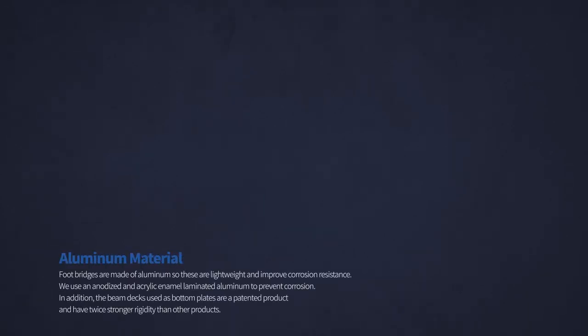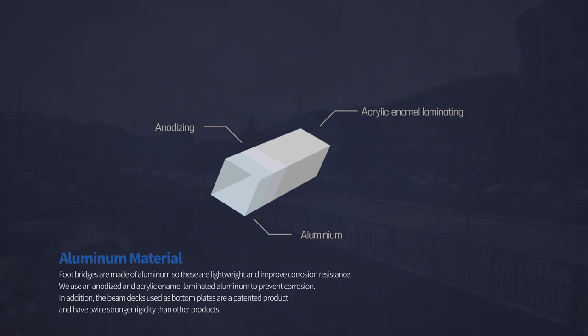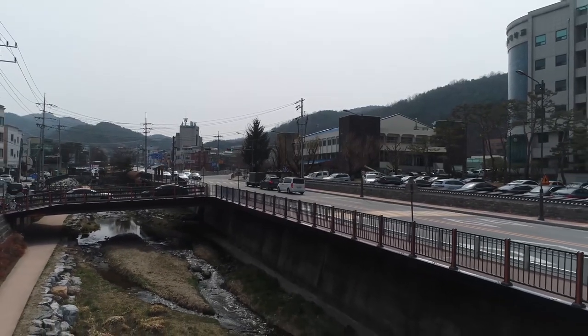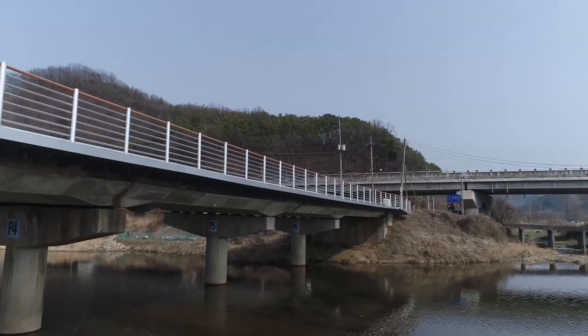Footbridges are made of aluminum, so these are lightweight and improve corrosion resistance. We use anodized and acrylic enamel laminated aluminum to prevent corrosion. In addition, the beam decks used as bottom plates are a patented product and have twice stronger rigidity than other products.